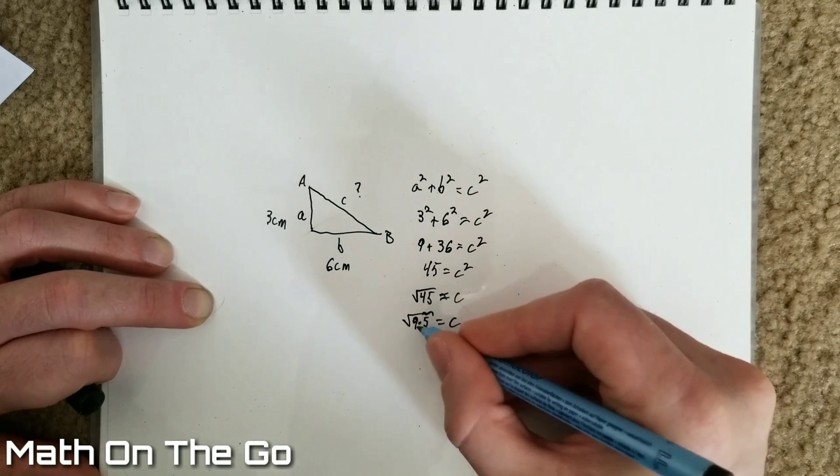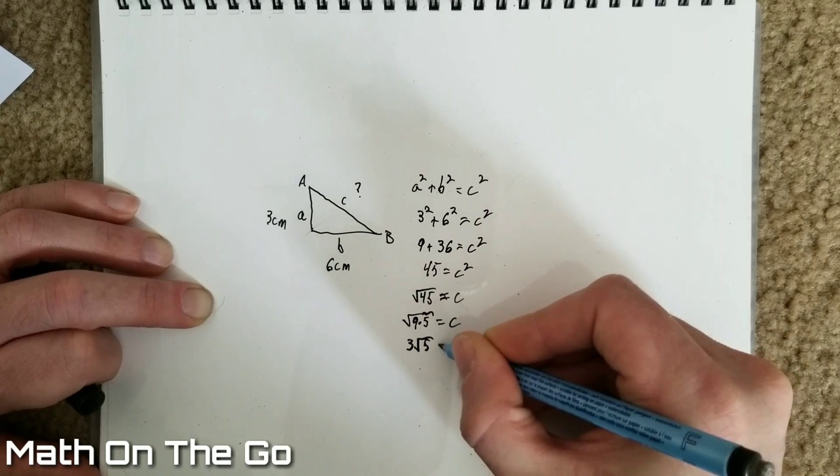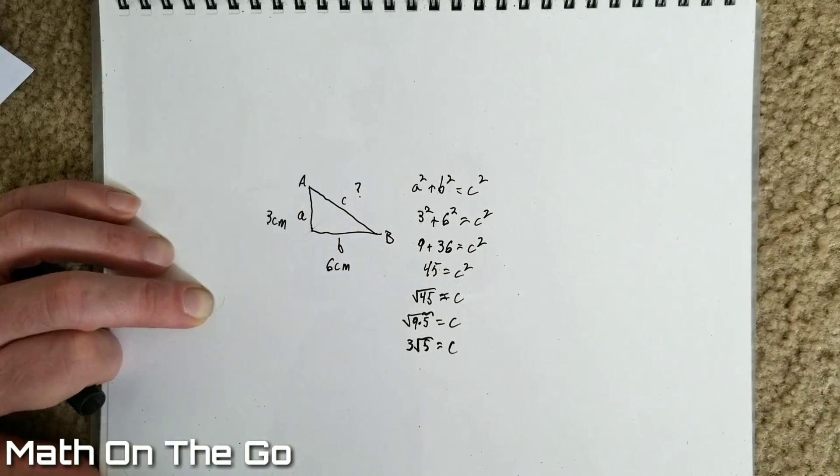And the square root of nine is three, and we can't reduce five anymore. So, that leaves us with C equals three square roots of five.